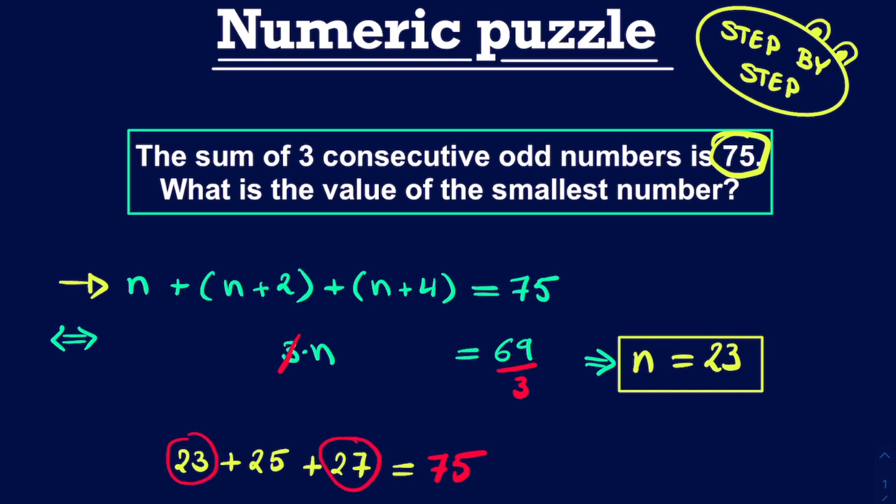Because if you take this 23 and 27 together, you simply get 50 plus 25 is 75. So we didn't make any mistakes, and we indeed solved this puzzle.